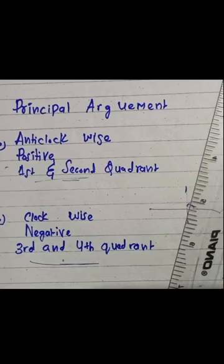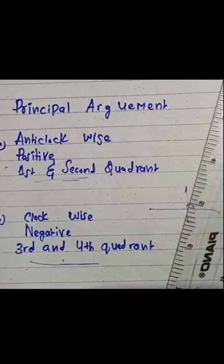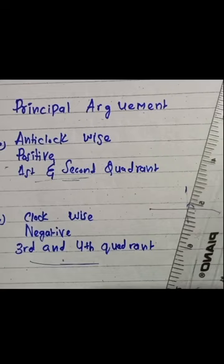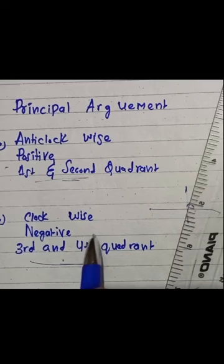We will solve one question and go through some formulas. What is the principal argument? The principal argument is a measure of angles between negative pi and pi radians of a complex number. The principal argument is different depending on anti-clockwise and clockwise direction. In the first and second quadrants, we always move anti-clockwise and the argument is always positive. In the third and fourth quadrants, we move clockwise and the argument is always negative.